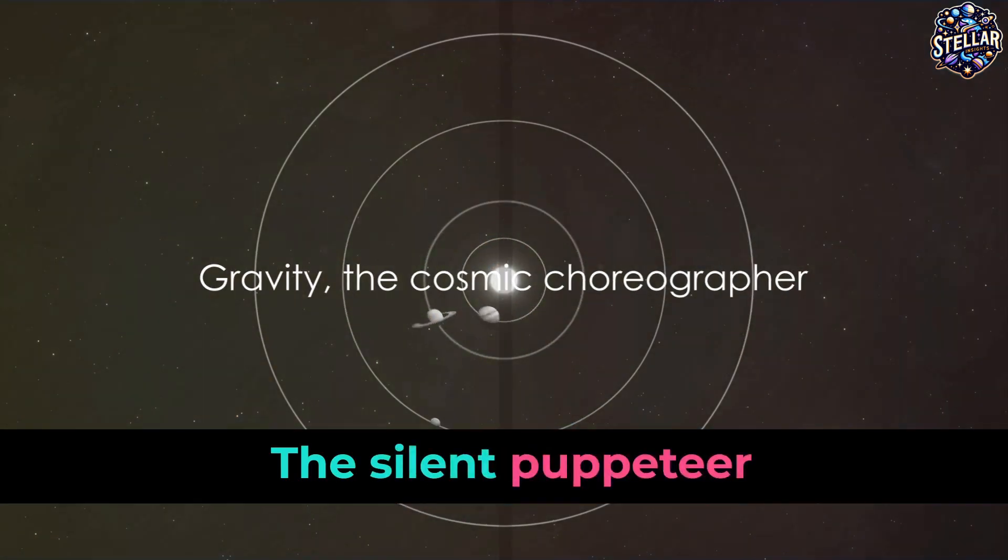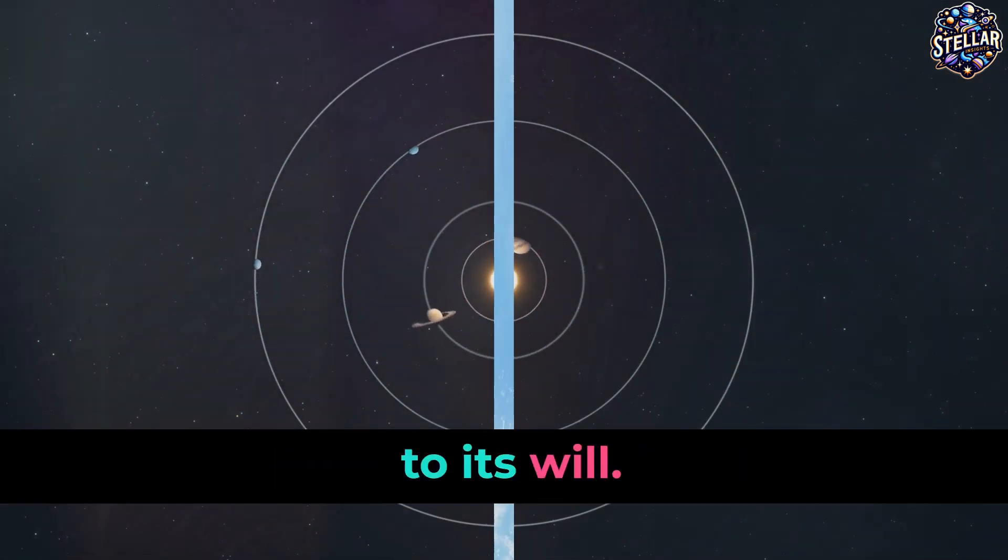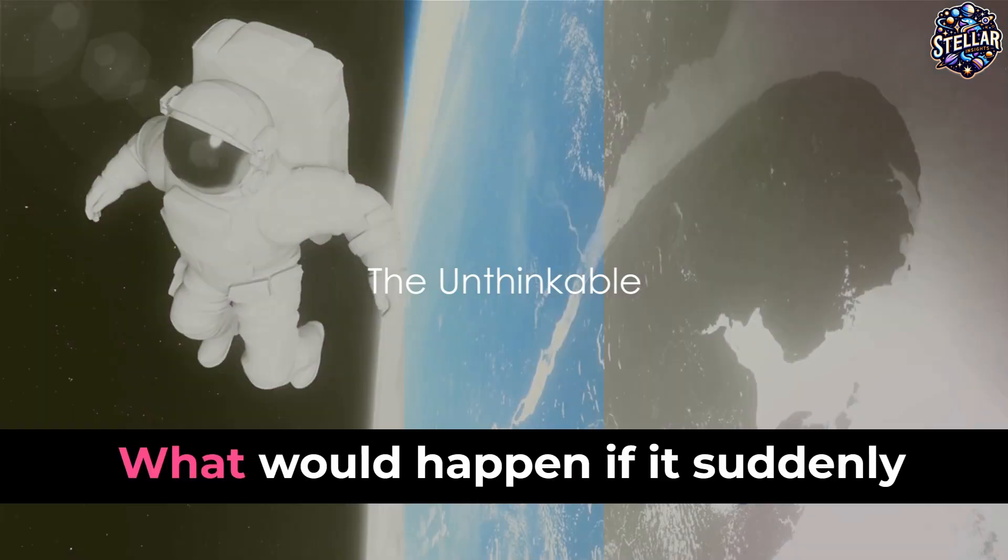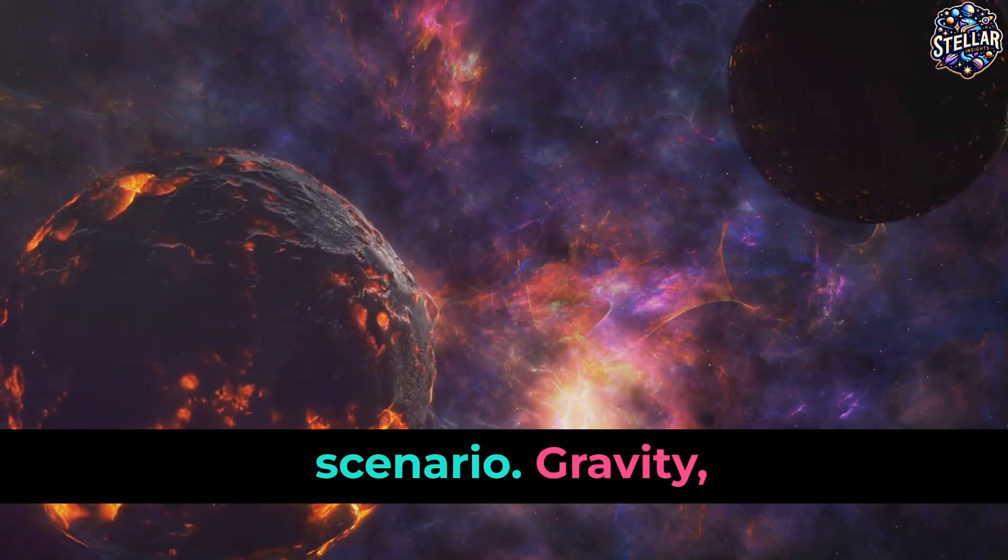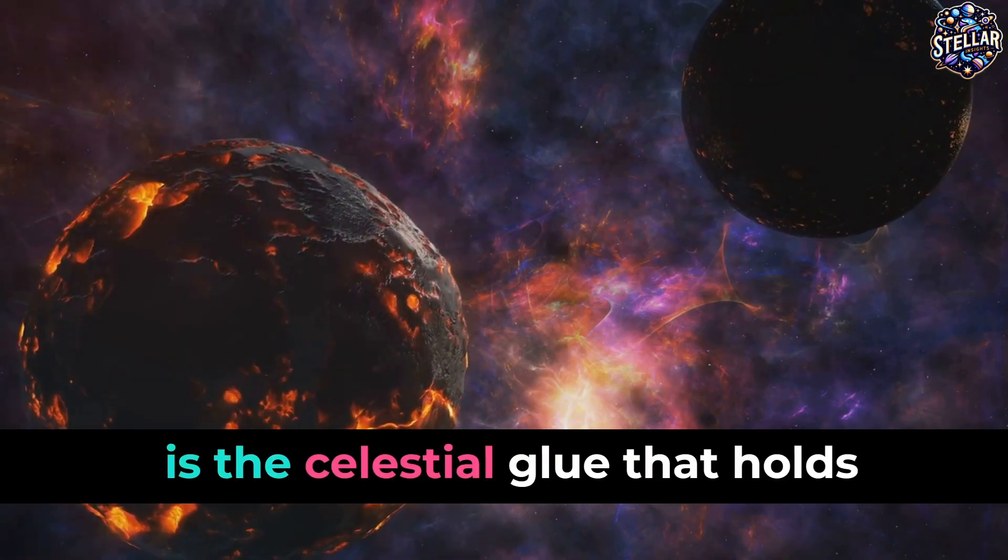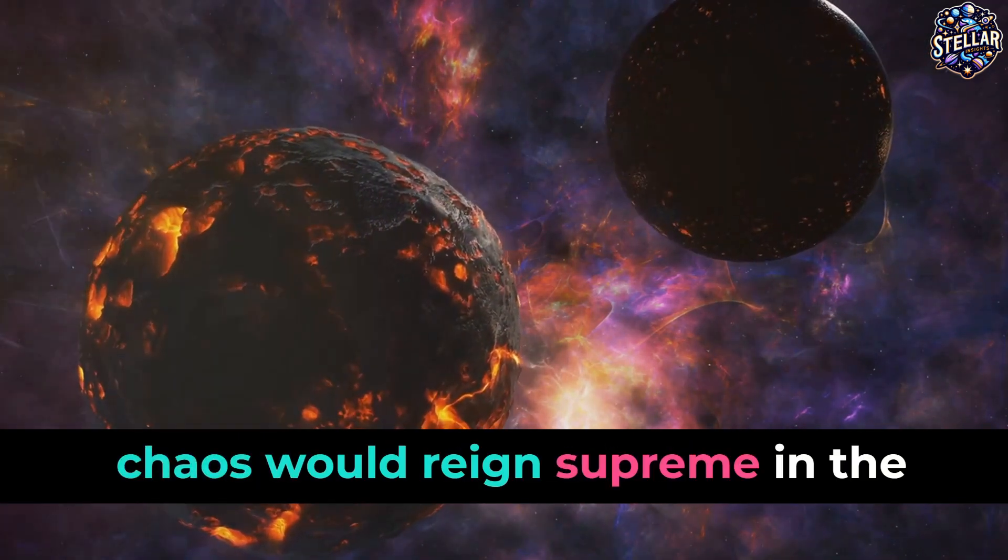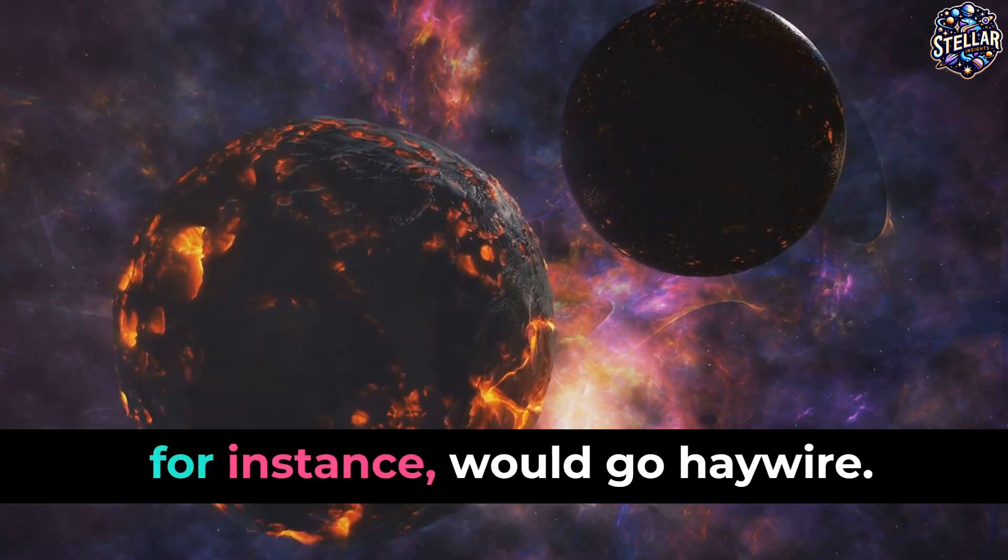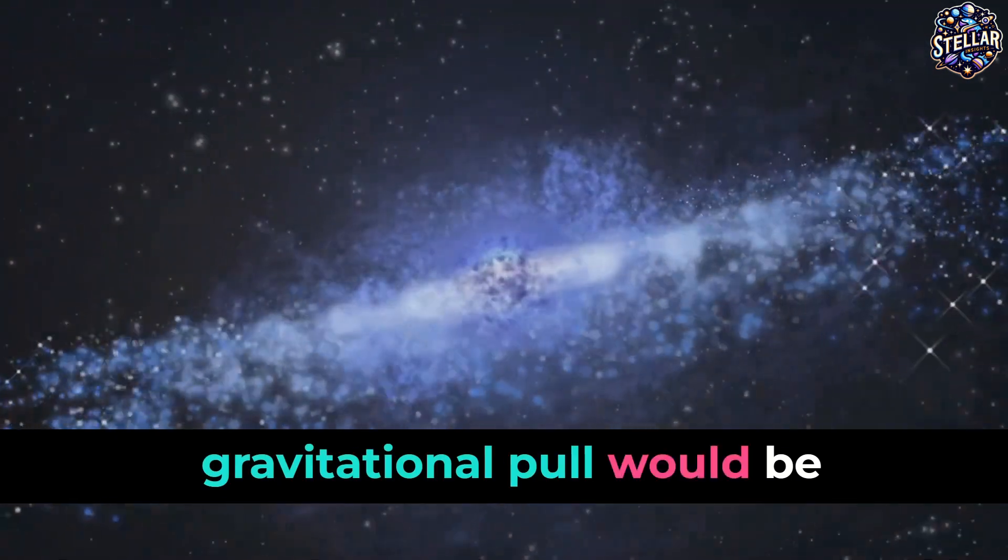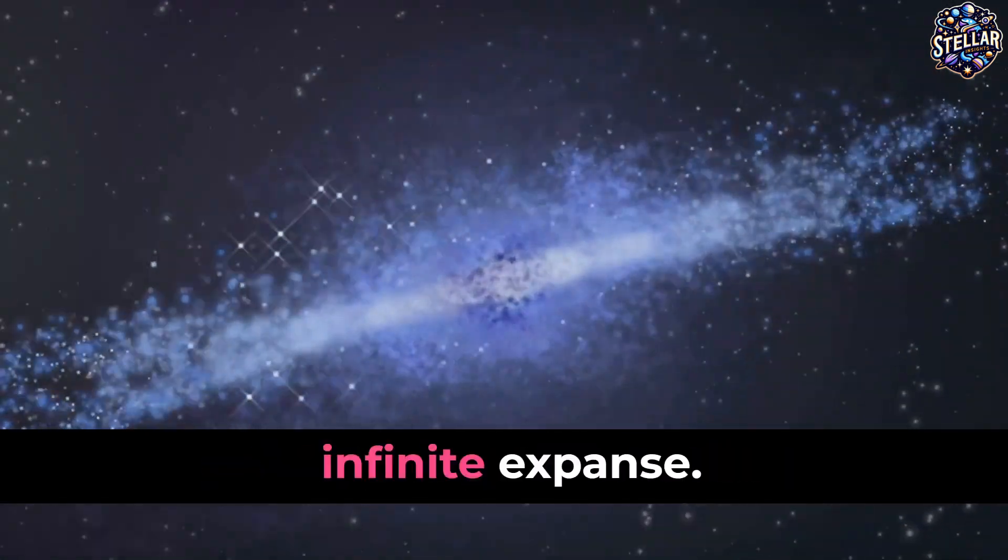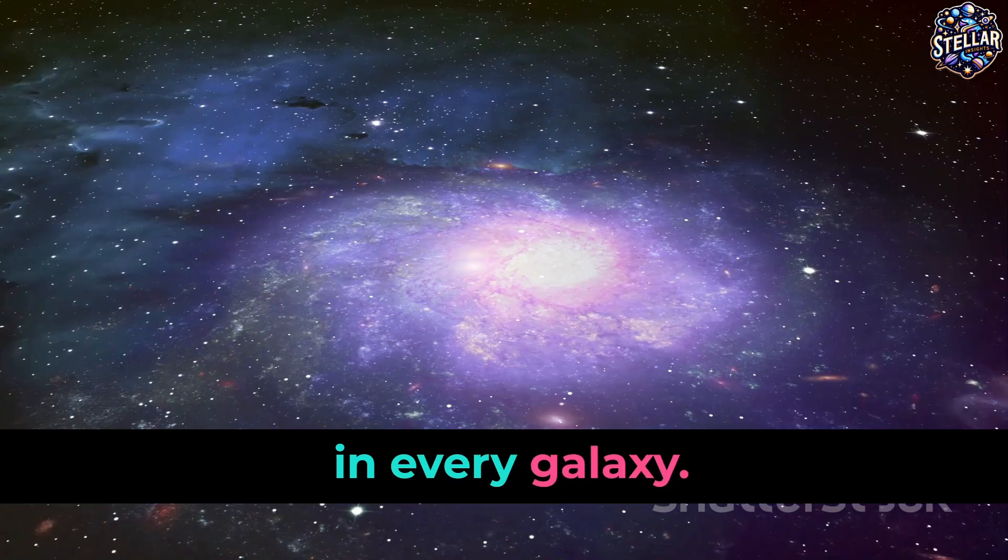Gravity, the silent puppeteer, choreographs the cosmic dance of celestial bodies and even bends light to its will. So we've seen the omnipotence of gravity. What would happen if it suddenly disappeared? Well, let's envisage this unthinkable scenario. Gravity, this subtle yet mighty force, is the celestial glue that holds our universe together. Without it, chaos would reign supreme in the cosmos. Our solar system, for instance, would go haywire. Planets no longer bound by the sun's gravitational pull would be flung out into the void, careening off into the infinite expanse. This would not only hold true for our solar system, but for every star system in every galaxy.